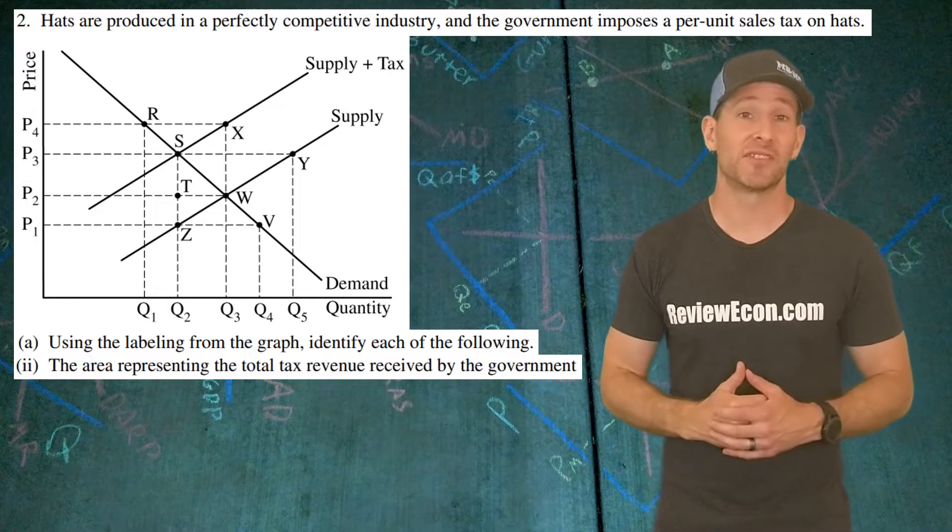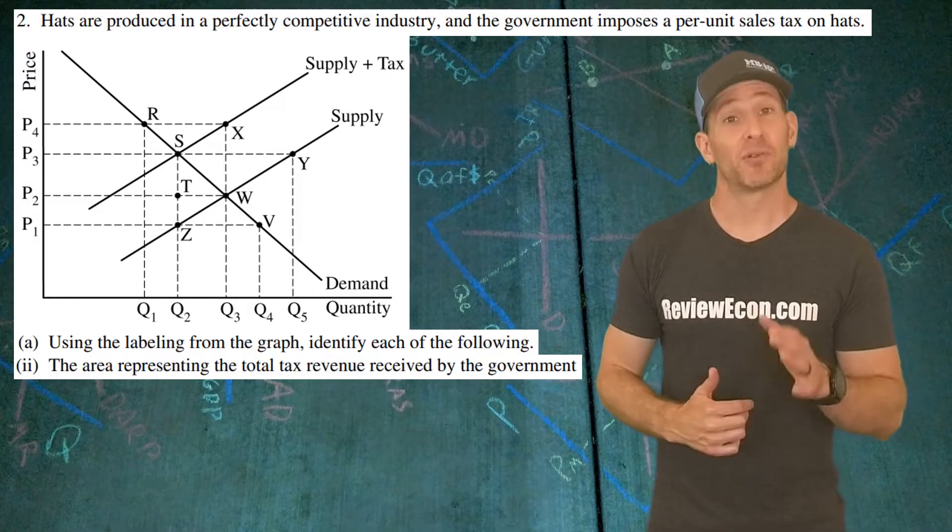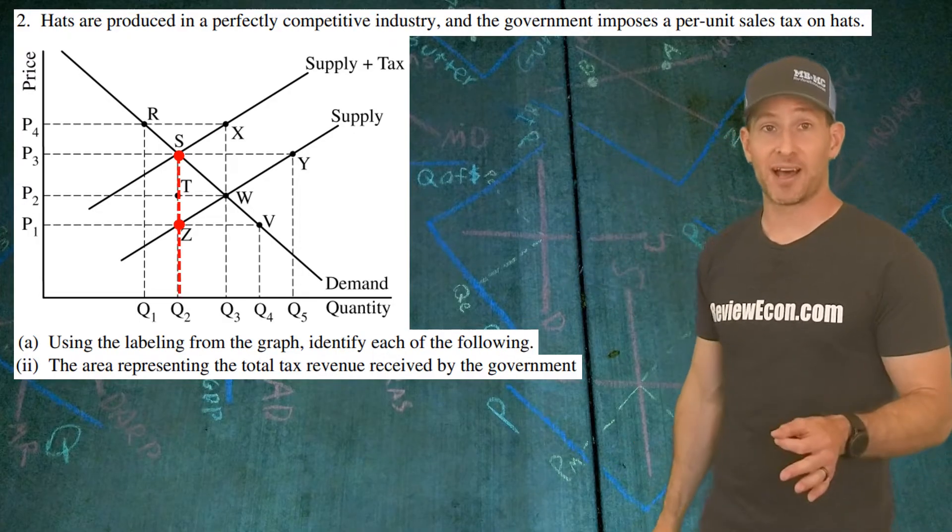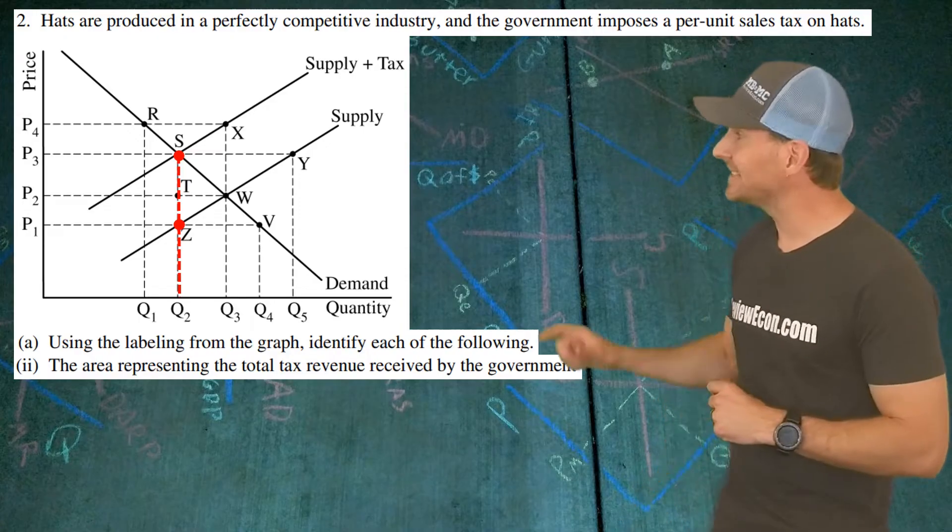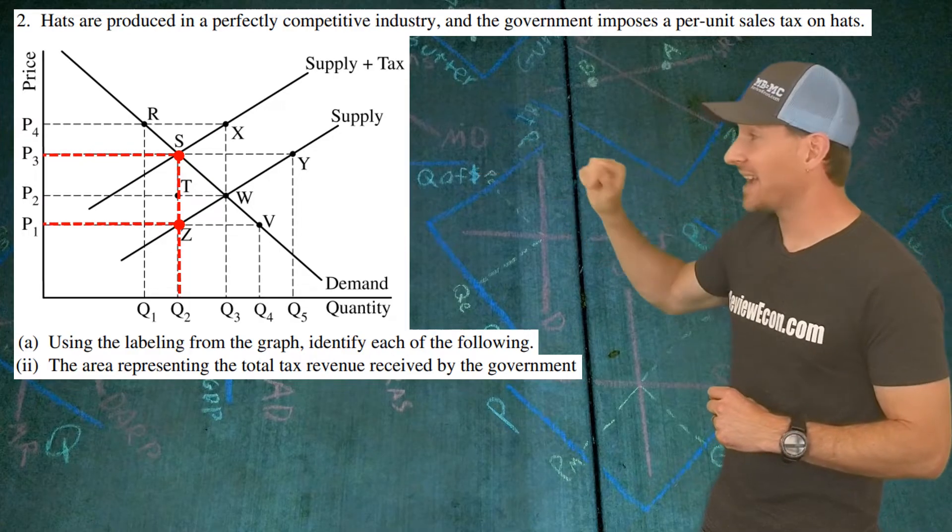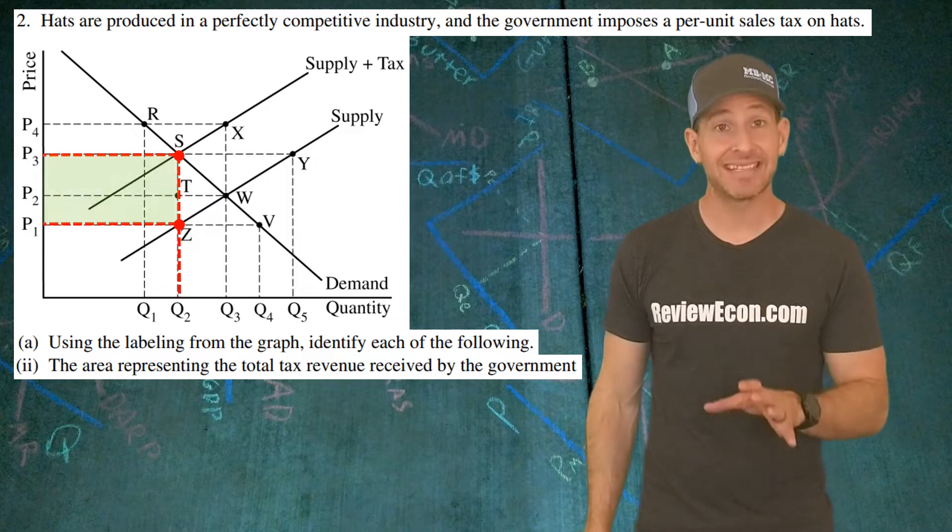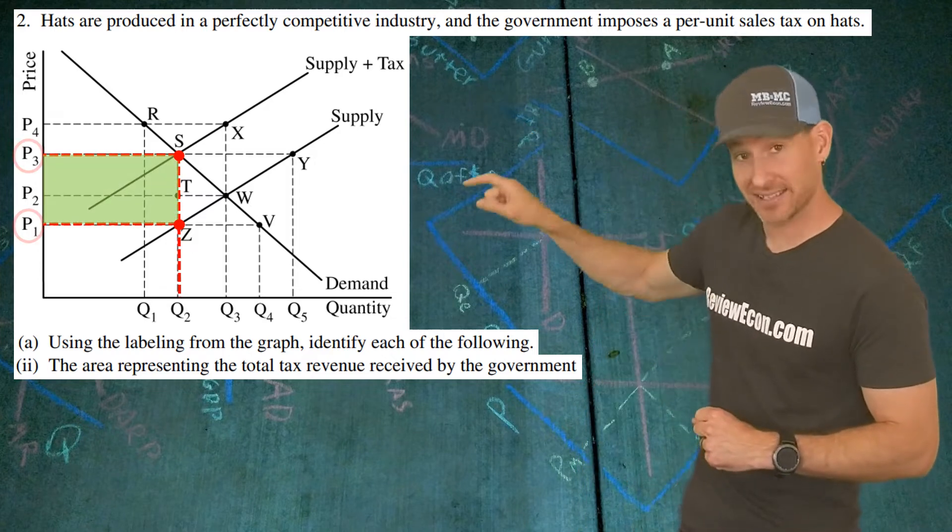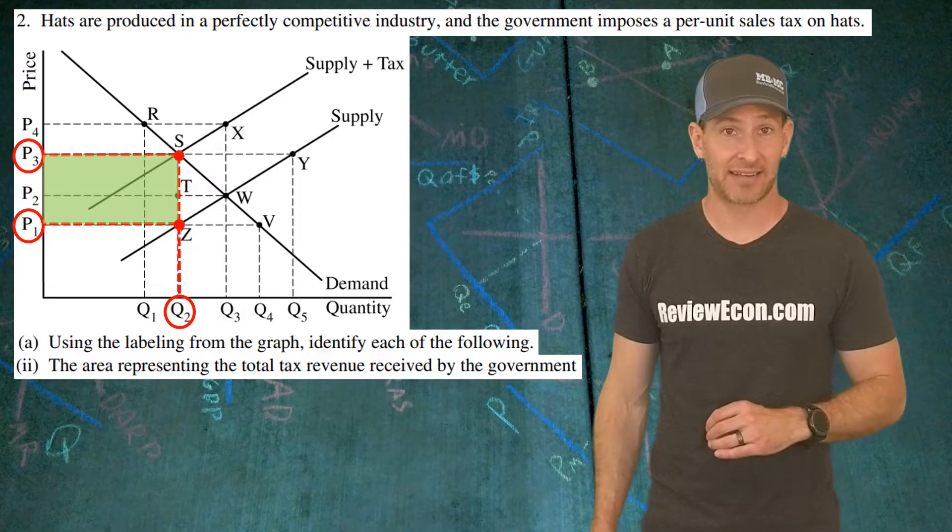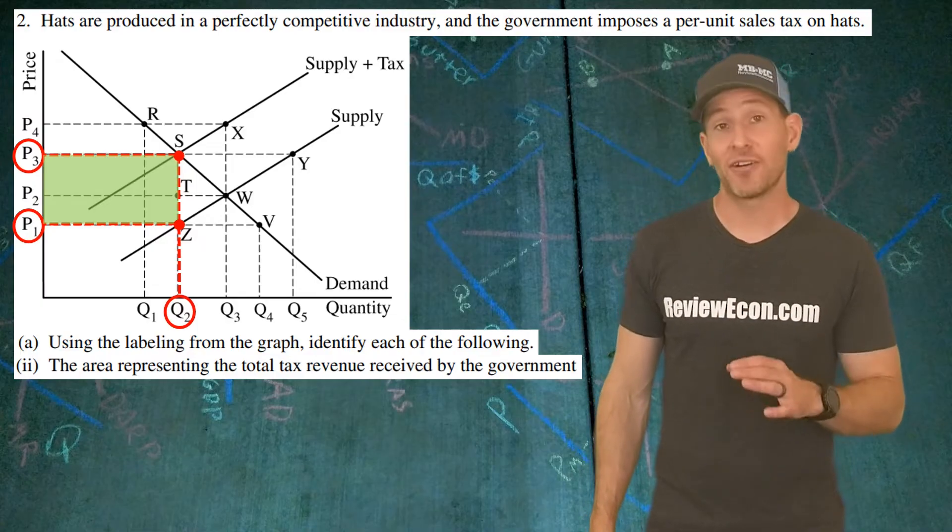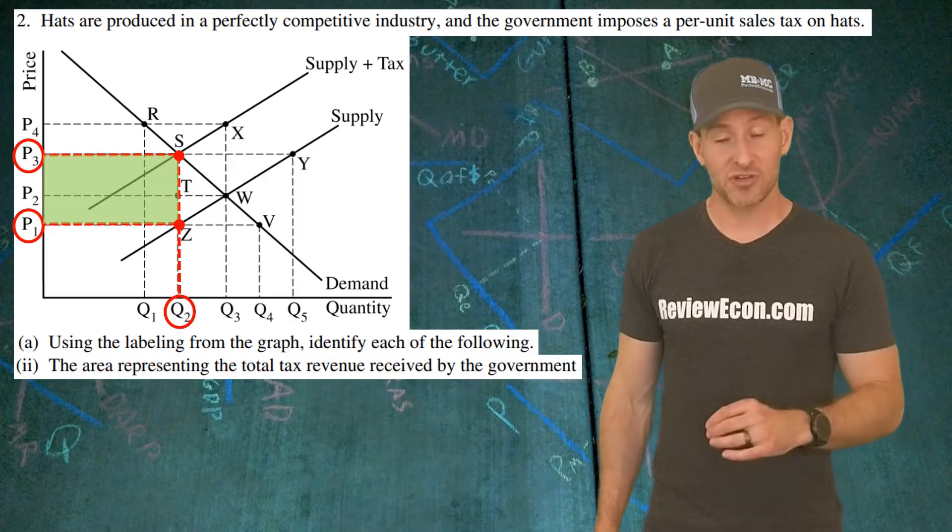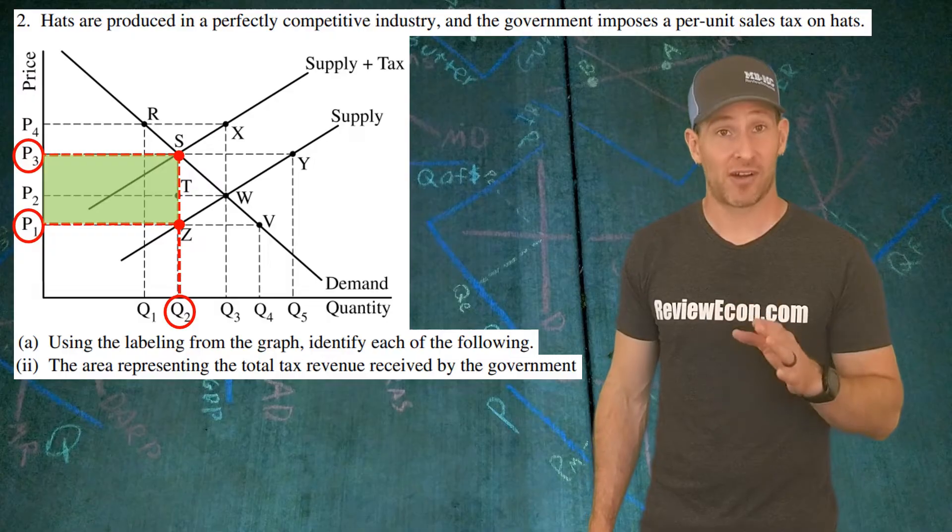For the second part of A, we're finding the tax revenue the government brings in as a result of this tax. In order to find that, you look at the new equilibrium, bring that down to the old supply curve, and that gap is the amount of the tax on this good. Bring it to the axis, and that gives us a four-sided shape that is the tax revenue. It is the height of the tax and the base of the quantity sold. If you were asked to calculate that, you would just calculate the area of that shape, and it would give us the amount of the tax revenue.